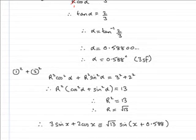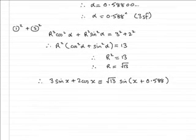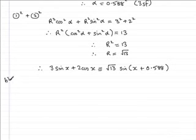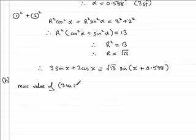We now move on to part B where we're asked to find the maximum value of (3sin x + 2cos x)^4. If we're looking for the maximum value of that, let's write: max value of 3sin x plus 2cos x all to the power four.